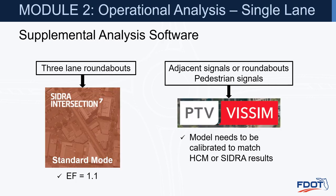For more complicated or higher volume locations needing three lanes on an entry, you move into Sidra Intersection using standard mode, which uses Australian equations. Florida DOT recommends using an environmental factor of 1.1 in standard mode. If you have a nearby signal, roundabout, HAWK signal, or any pedestrian signal where you want to analyze impacts, that's when you could use microsimulation. For VISSIM, the model needs to be calibrated to match HCM or Sidra results first, then add adjacent intersections or pedestrian signals to see the resulting analysis.